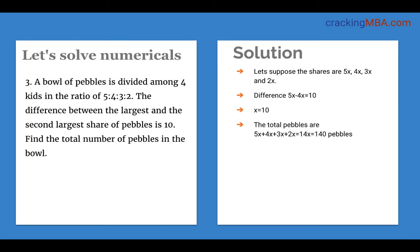A bowl of pebbles is divided among 4 kids in the ratio 5 to 4 to 3 to 2, and the difference between the largest and second largest share of pebbles is 10. Find the total number of pebbles. Assume the shares as 5X, 4X, 3X, and 2X. The difference between the largest and second largest is 5X minus 4X equals 10, so X equals 10. The total pebbles are 5X + 4X + 3X + 2X, which equals 140 pebbles.